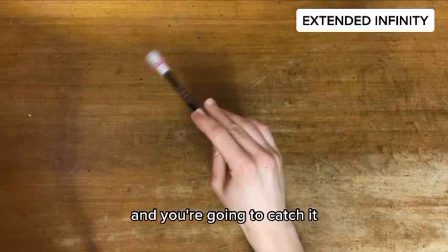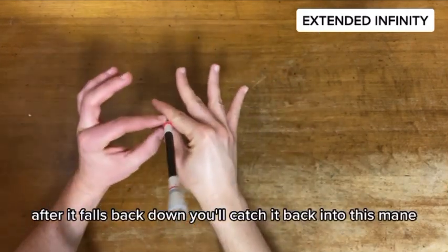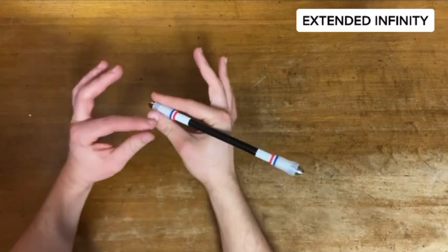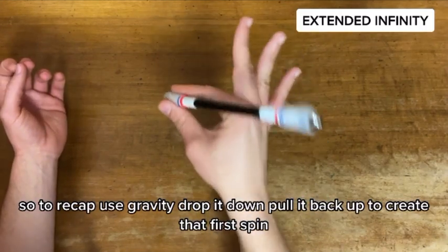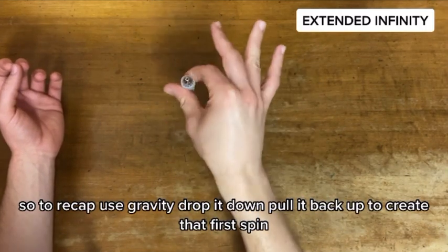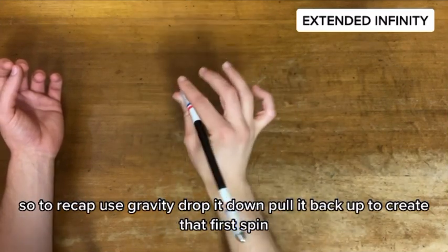And you're going to catch it after it falls back down. You'll catch it back into the main two fingers you started with. So to recap: use gravity, drop it down, pull it back up to create that first spin.